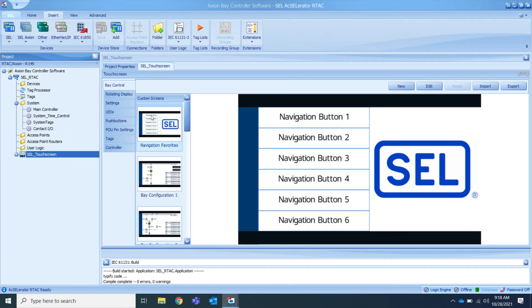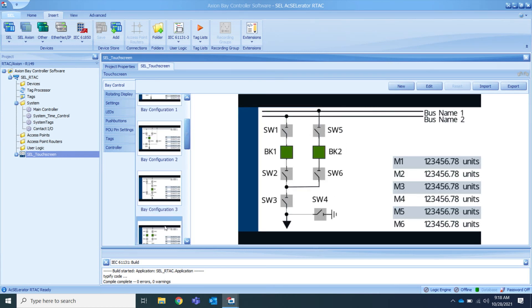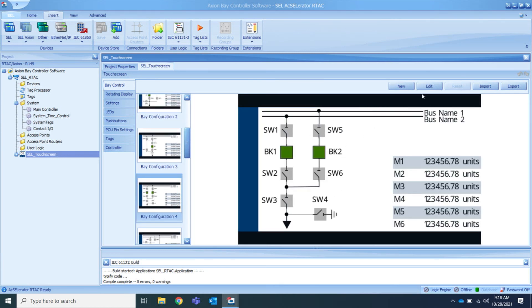The SEL touchscreen device comes pre-configured with many custom screens that are intended to provide you a starting point for your application. If you see a screen that you would like to make modifications to, simply click the Edit button which will open up these custom screens in BayScreen Builder software. For this example, I'm going to show creating new screens from scratch.